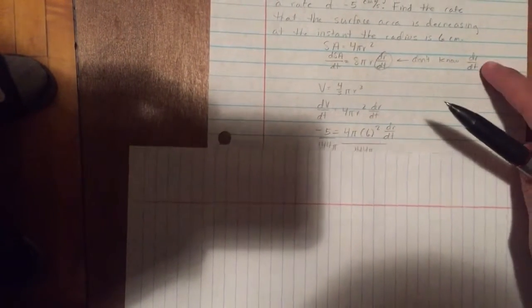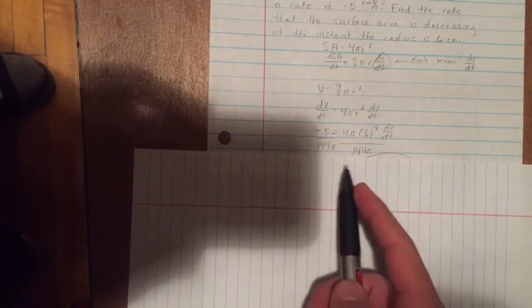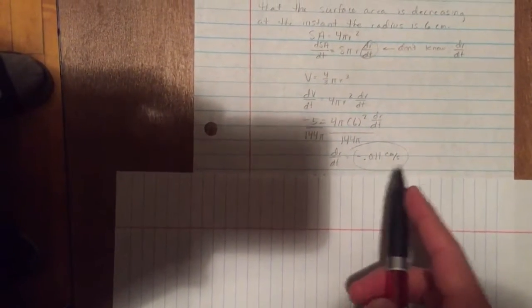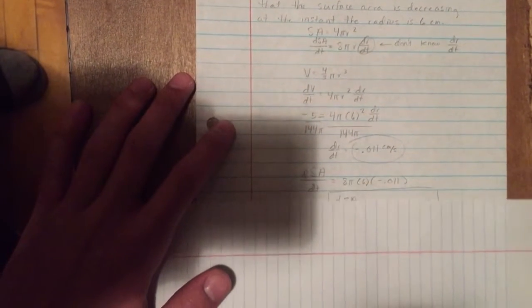We've got negative 5 is equal to 4π(6)² dr/dt. Go ahead and divide by 144π because that's what 4 times 36 is, and we get dr/dt is equal to negative 0.011 centimeters per second.